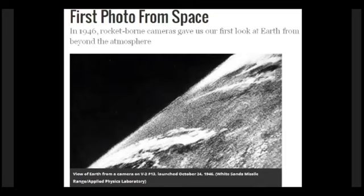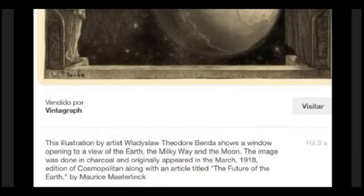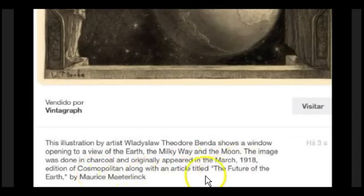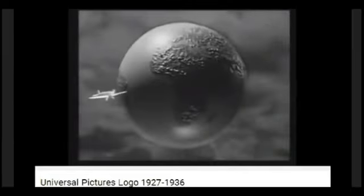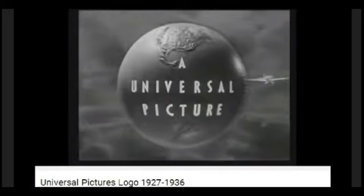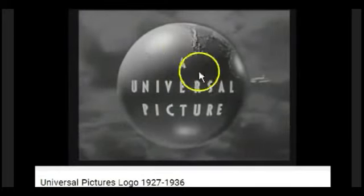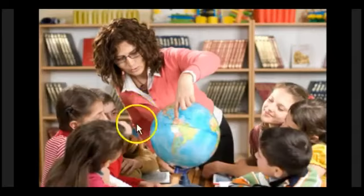These Masons came up with the whole entire concept. Here's more detail from 1918 — it's done with charcoal and originally appeared in the March 1918 edition of Cosmopolitan along with an article titled 'The Future of the Earth.' This is your future — going back to 1918, the whole entire concept. Also, Universal Pictures: from 1927 to 1936, this was their logo that appeared before movies played. Again, pre-1946, before the supposed first photo of the ball earth — how is it possible it's so accurate with current day globes?